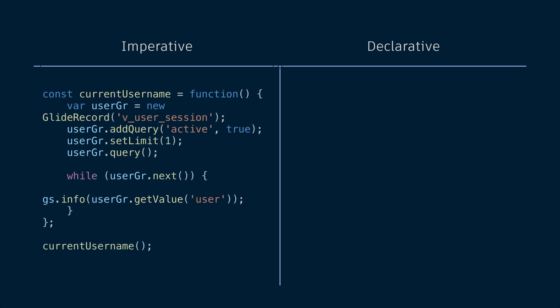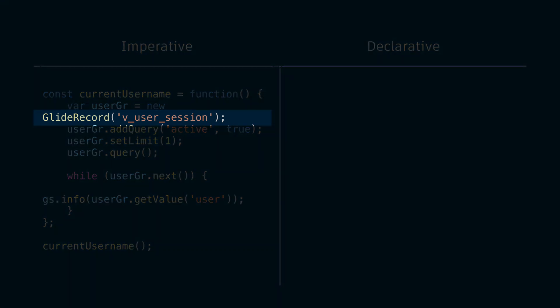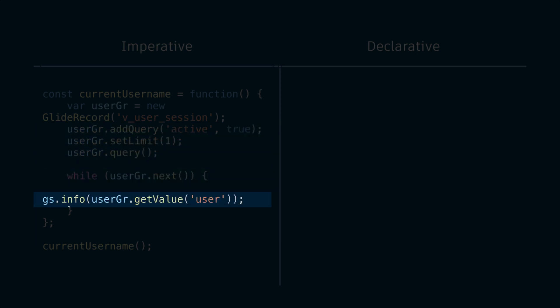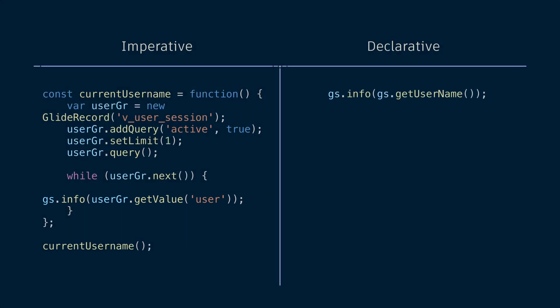If we take a look at an example more directly related to ServiceNow — if we wanted to get the username of the currently logged in user, there are a few ways we can do that. On the left-hand side, using an imperative method, we specify the instructions step-by-step: first, do a GlideRecord query of the user session table, where the active record is the currently logged in user, then output that username. On the right-hand side, we have a much simpler example using the GlideSystem method called getUsername. Simple.